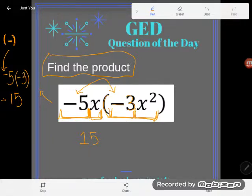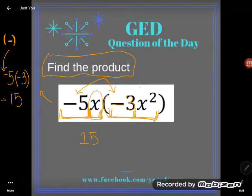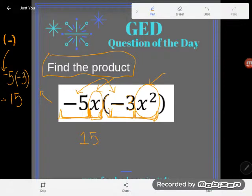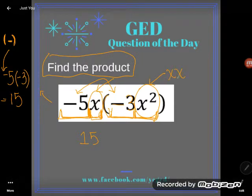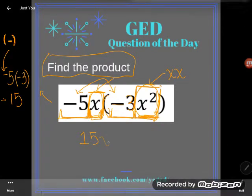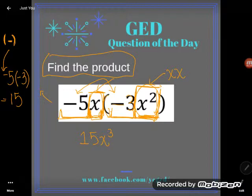So -5 times -3 is 15. Now all I have to multiply together are these x's. Here I have an x, and here I have an x². Remember what x² means? x² literally means two x's multiplying. So there were already two x's multiplying right here, and now here's another x multiplying. That will give me a total of three x's multiplying, so x to the third power. And that is the final answer.